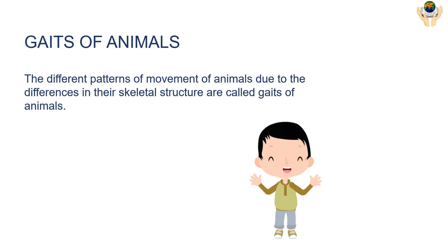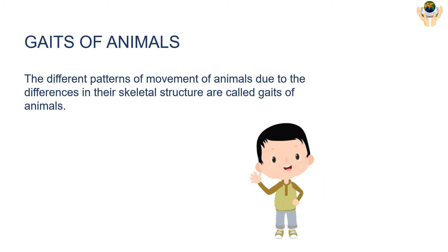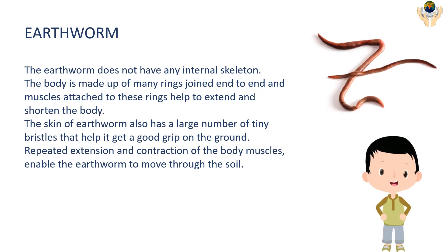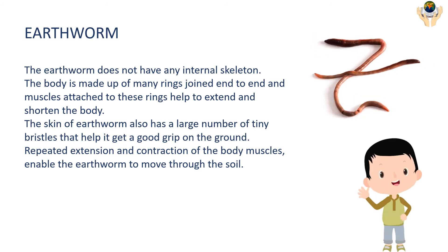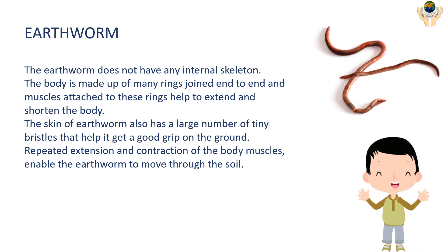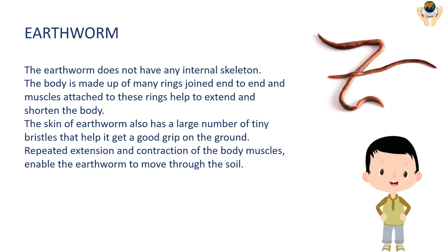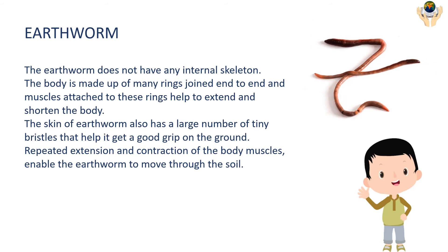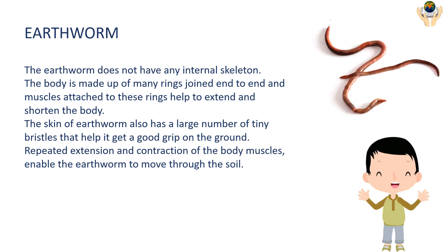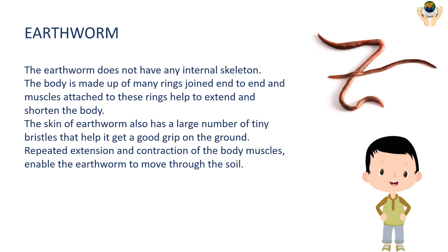Gaits of animals — the different patterns of movement of animals due to differences in their skeletal structure are called gaits. Earthworm: the earthworm does not have any internal skeleton. Its body is made up of many rings joined end to end, and muscles attached to these rings help to extend and shorten the body. The skin of the earthworm also has a large number of tiny bristles that help it get a good grip on the ground. Repeated extension and contraction of the body muscles enable the earthworm to move through the soil.